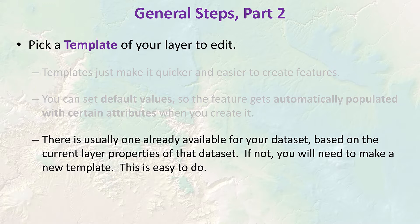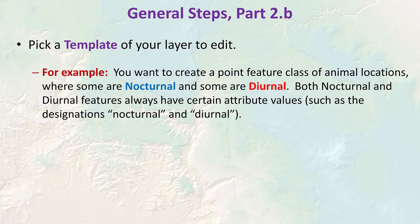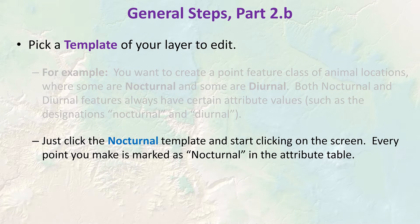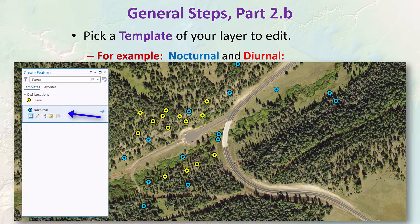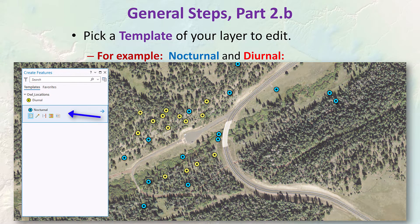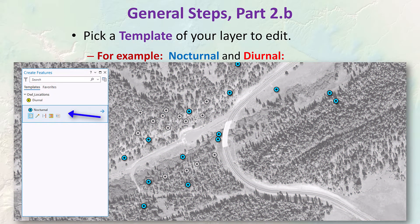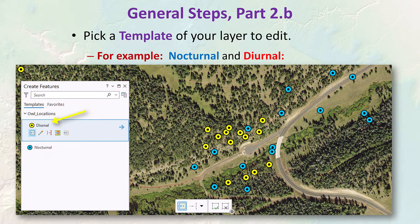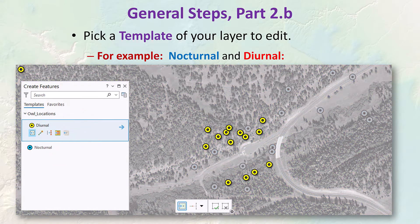If the layer is symbolized by unique values, the template will reflect those unique values. For example, suppose we want to make a point feature class of animal locations — some nocturnal, some diurnal. Nocturnal features always have certain attribute values and the same with diurnal. When we want to make nocturnal locations, we click the nocturnal template and start clicking on the screen, and every point is marked as nocturnal in the attribute table. Then we click the diurnal template and all those points have diurnal automatically written in.